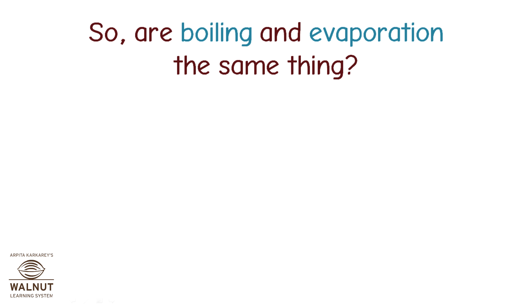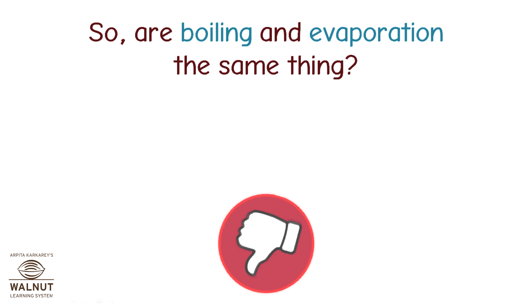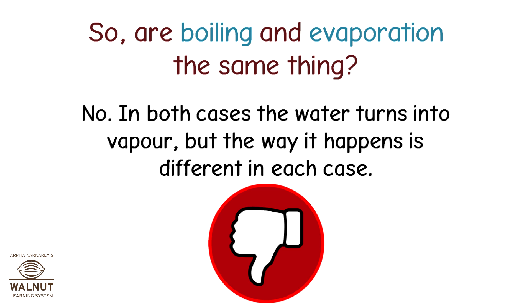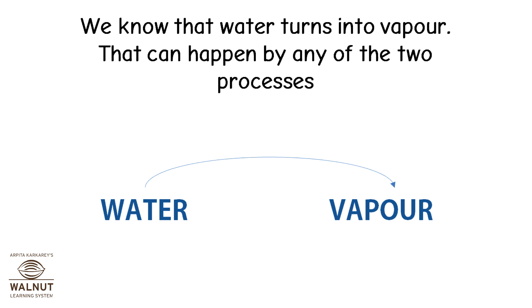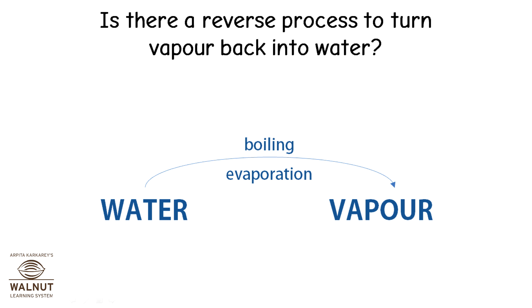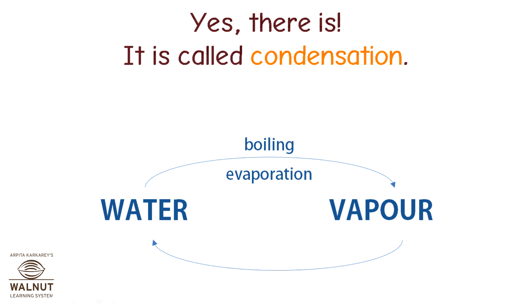So, are boiling and evaporation the same thing? No. In both cases, the water turns into vapor, but the way it happens is different in each case. We know that water turns into vapor — that can happen by either of the two processes. Is there a reverse process to turn vapor back into water? Yes, there is. It is called condensation.